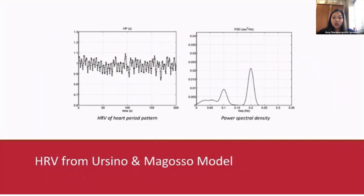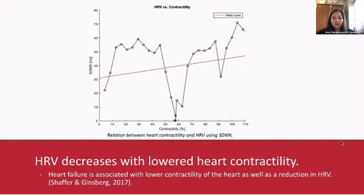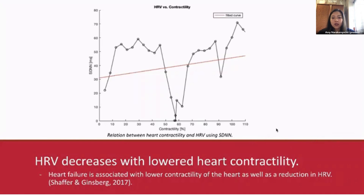Here is the heart rate variability of the heart period pattern and an increase in the strength of the 1 hertz power spectrum from Ursino's model. Within our model, we included a parameter within the AV node which reflects the strength of the heart, and we assessed the relation between heart rate variability and contractility of the heart by reducing this parameter. HRV generally increases with an increase in the strength of the heart, represented by the contractility. Studies have shown that heart failure is associated with lower contractility as well as a reduction in heart rate variability. Hypertension is also related to overall lower HRV values, and low SDNN can predict mortality. The SDNN typically ranges from 30 to 80 milliseconds, which was also predicted by our model.